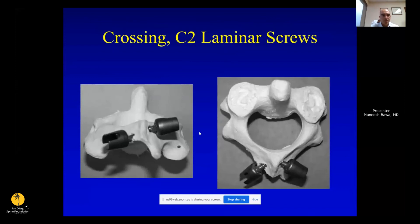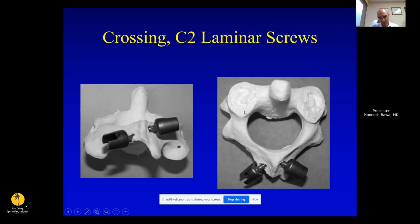If the pars are too small, C2 laminar screws can be used. One screw starts more proximal and one more distal. Finding the medial edge of the pars ensures the screw is not too medial or too lateral. When starting pars or pedicle screws, identifying the medial wall is critical to keep the screw out of the canal. The pars is the area between the superior and inferior articular processes, while the pedicle connects the posterior bone to the anterior body. The original description used pedicle screws but required a steep lateral-to-medial angle, making placement difficult.